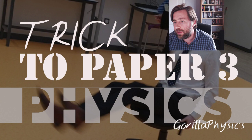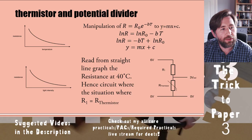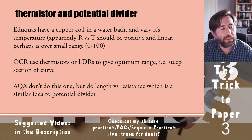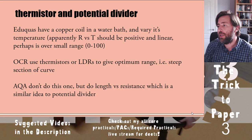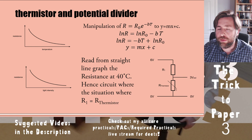I'm going to go into two practicals that are pretty likely to come up on Edexcel. I'm going to talk about the thermistor practical, which is likely to come up, and potential dividers, which almost certainly will come up in Paper 3. I'll also talk about gamma in more detail than I covered in the OCR and AQA streams.